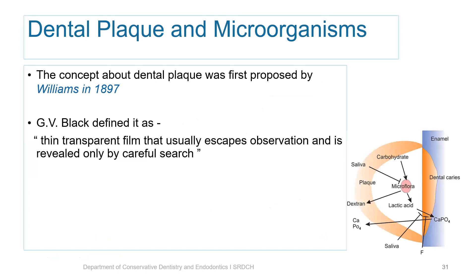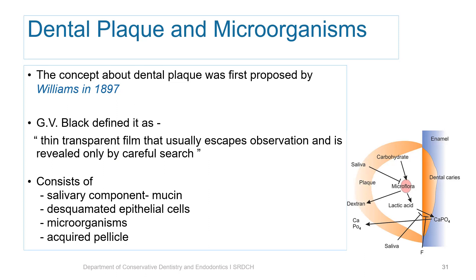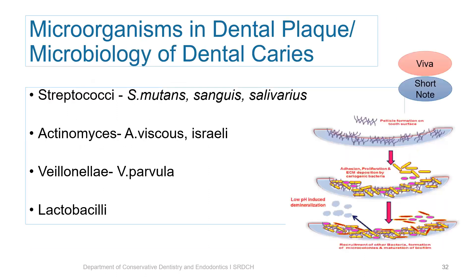Coming to dental plaque and microorganisms — the concept of dental plaque was proposed by Williams in 1897, and G.V. Black defined it as a thin transparent film that usually escapes observation and is revealed only by careful search. Dental plaque has a very important role in the initiation and progression of dental caries. It consists of salivary components such as mucin, desquamated epithelial cells, microorganisms, and acquired pellicle.